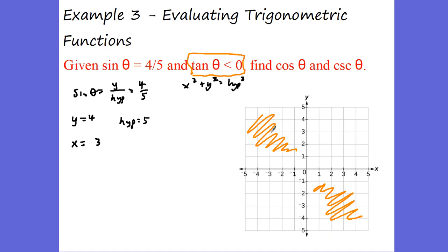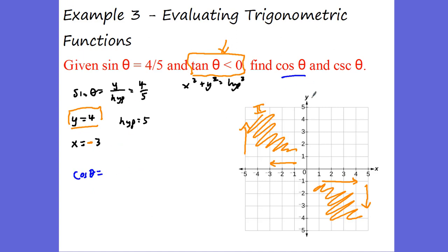In quadrant 2, x is negative and y is positive. In quadrant 4, x is positive but y is negative. Since I already know my y is positive 4, I must be in quadrant 2, which means x has to be negative 3. The cosine of my angle is x over hypotenuse: negative 3 over 5. The cosecant of my angle is hypotenuse over y: 5 over 4, or 5 fourths — the reciprocal of the sine value.